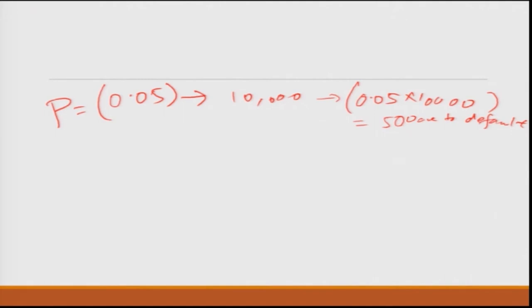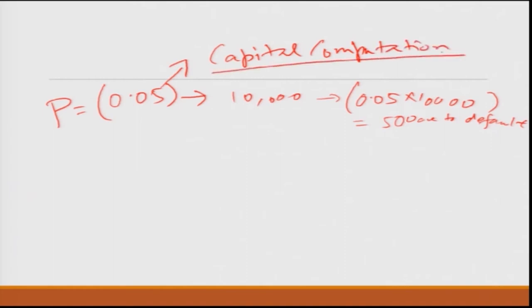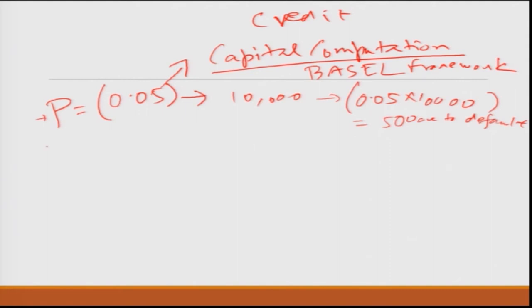There are various ways to interpret this value. One is that you can directly use this value — for example, in banking you need it for capital computation, which is an important calculation each bank must do. It is essentially the amount a bank should keep as a buffer to account for the fact that some people will default.